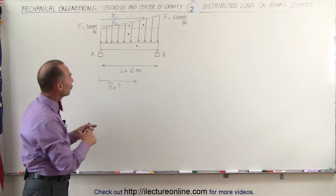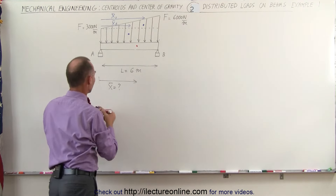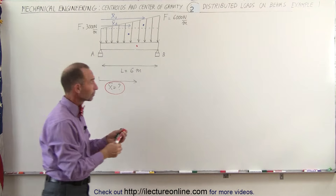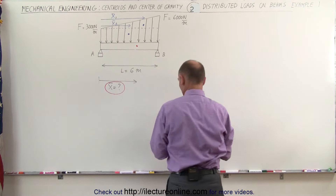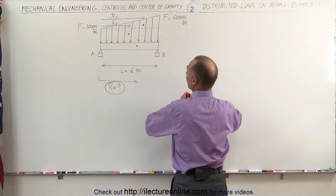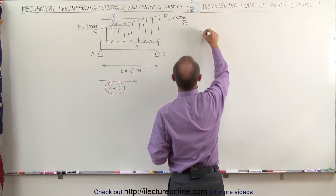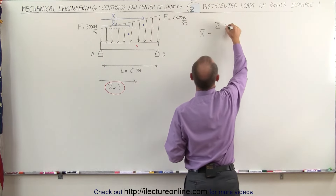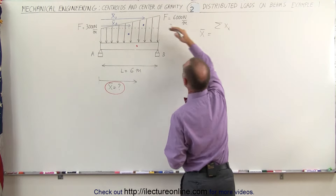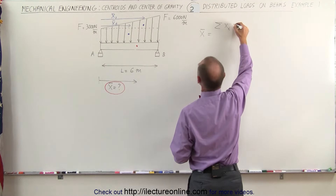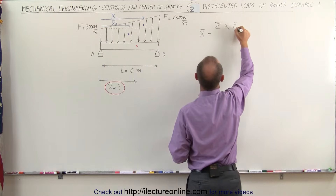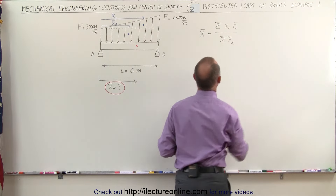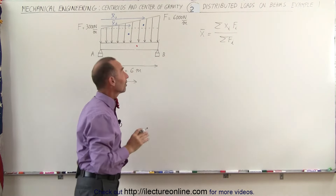Let's now define and find the centroid. The x-coordinate of the centroid is equal to the sum of all the x-coordinates of each individual region multiplied by the total force of each region, divided by the sum of all the forces of all the regions. That's how we find the centroid.